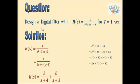In this problem, we need to design a digital filter with H(s) equal to 1 by s squared plus 7s plus 12, for T is equal to 1 second.